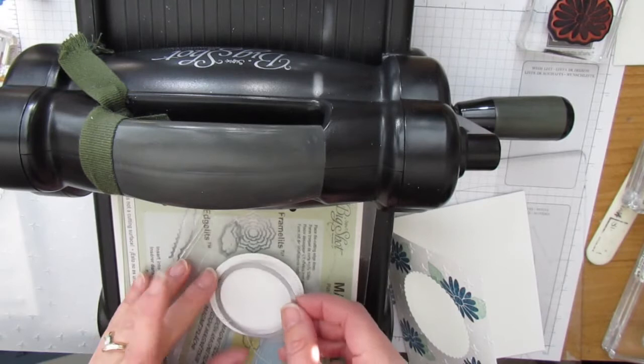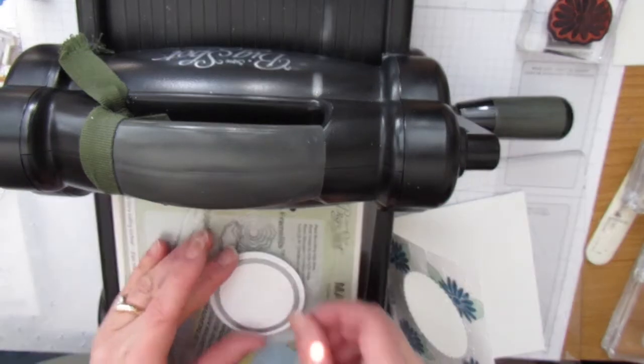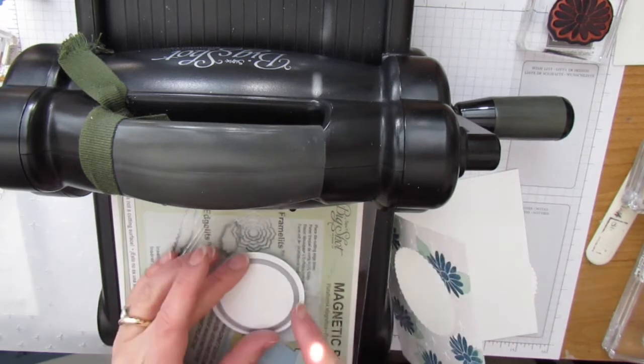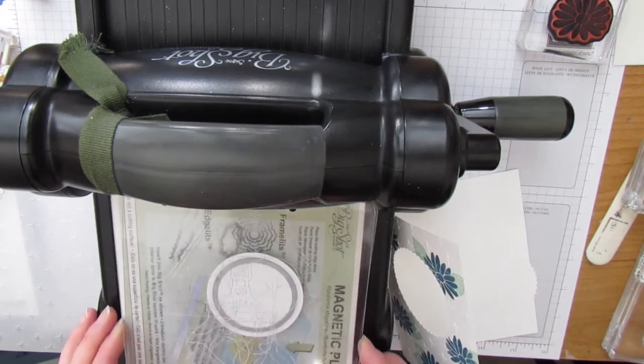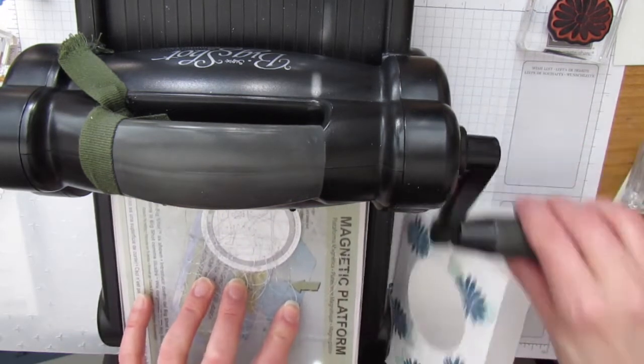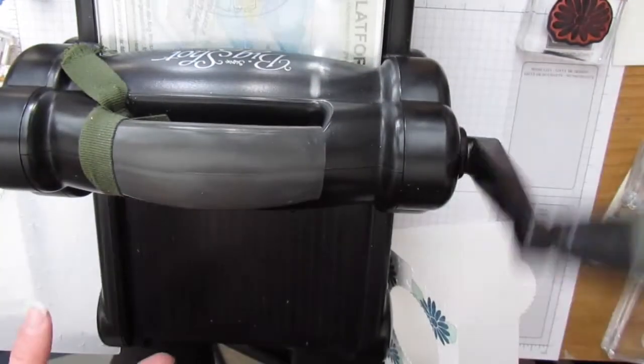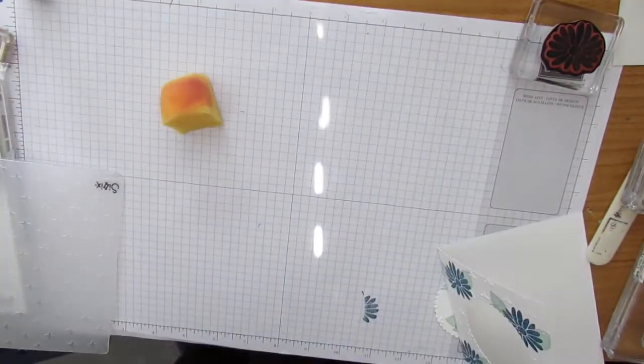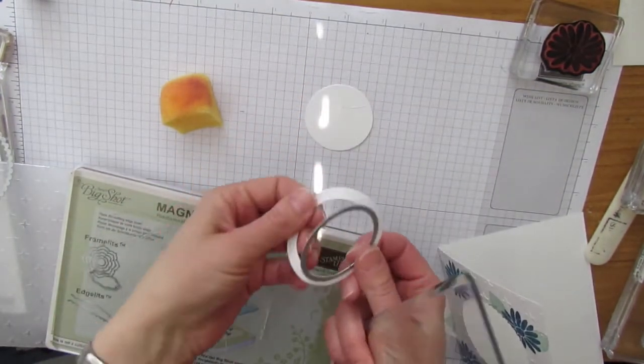But then I need to use this circle. This one is the fourth largest circle from the layering circle framelit dies. If you don't have the layering circle framelit dies, I highly recommend them. I'm just centering it because this is going to create a frame for my card. You'll see what I'm doing once we go to finish the card. I like to get all my big shotting done all at one time and then I've got some space to work on my card. Put that aside. And there you have it.